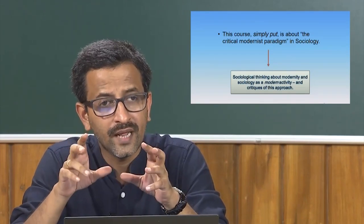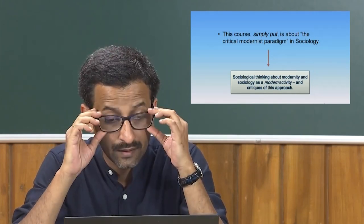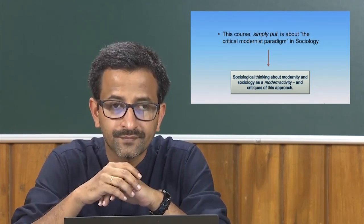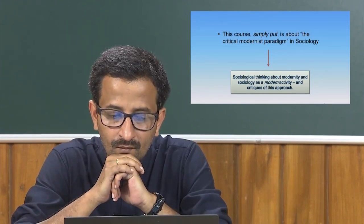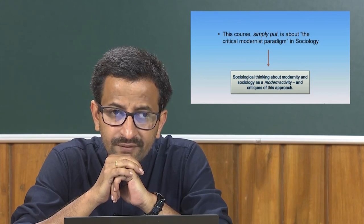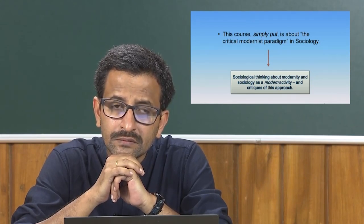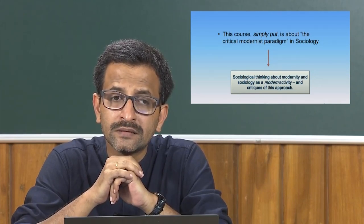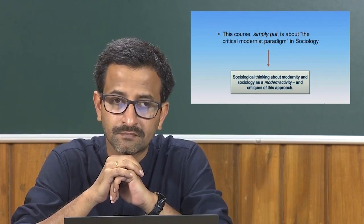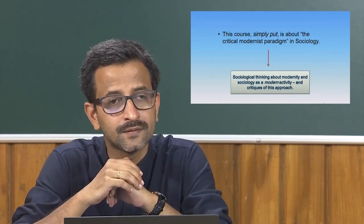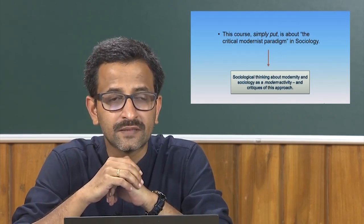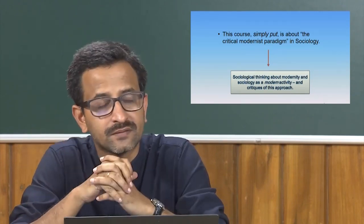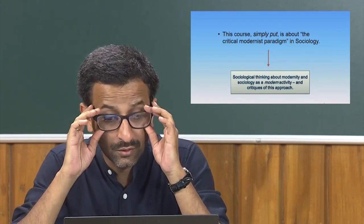Earlier its name was social physics. In fact, Auguste Comte coined the term sociology from social physics. When we say sociology is a modern activity, the emergence of sociology as a discipline must be traced to the transition from pre-capitalist social formations to capitalist social formations. In this sense sociology is a modern activity.